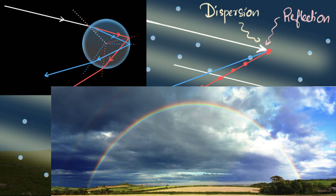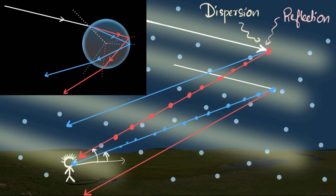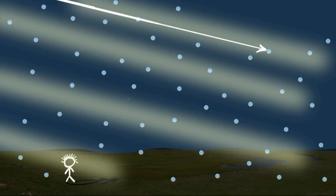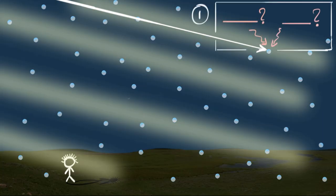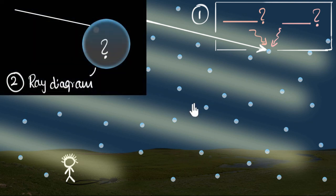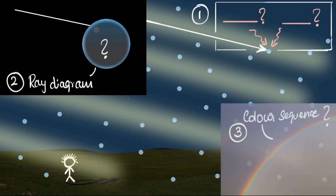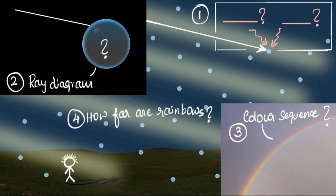We didn't explore why the rainbow is bow-shaped — that's something we'll explore in a future video. Let's summarize what we learned. Can you recall the two important phenomena that have to happen to light for us to see rainbows? Can you draw a ray diagram showing refraction inside the raindrop? Using that diagram, can you explain the color sequence — why red is on the outside and violet on the inside? And can you explain to friends or family how far rainbows are? If you have trouble, go back and revisit the relevant parts of the video.